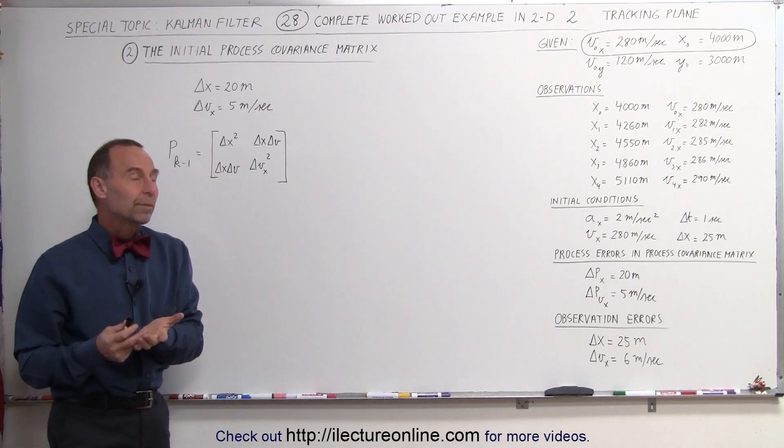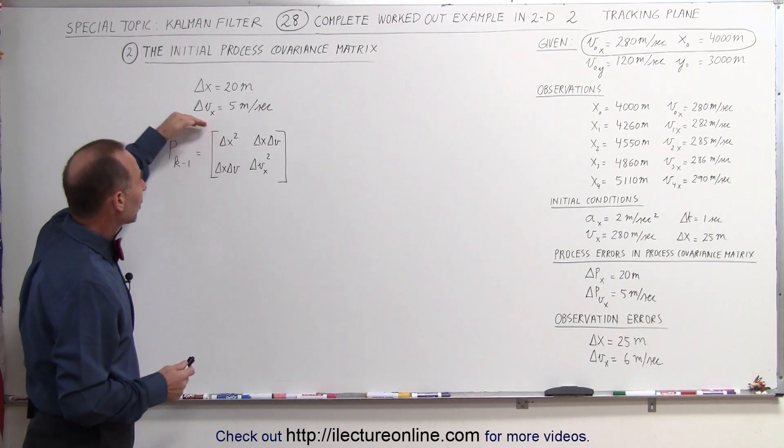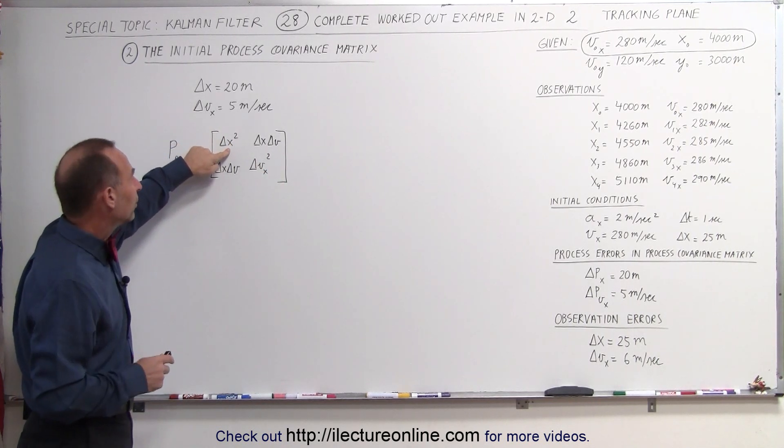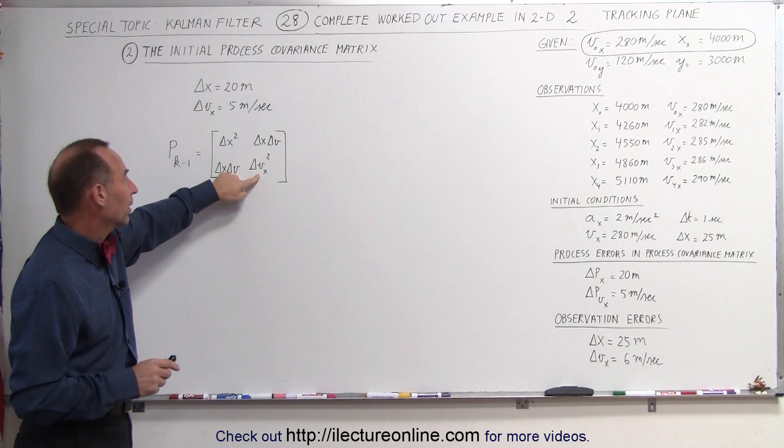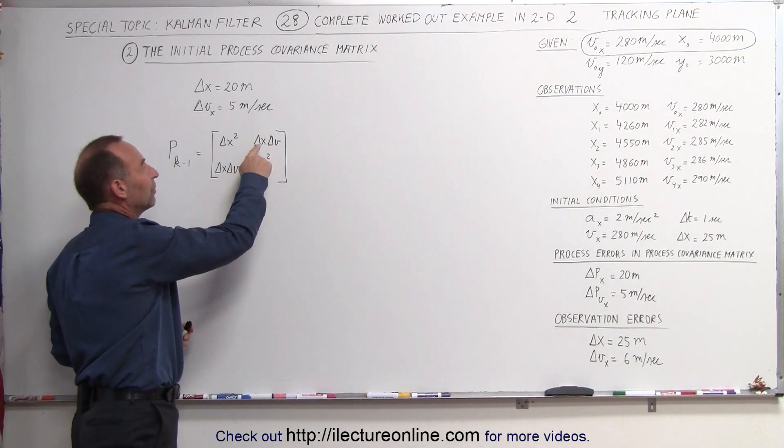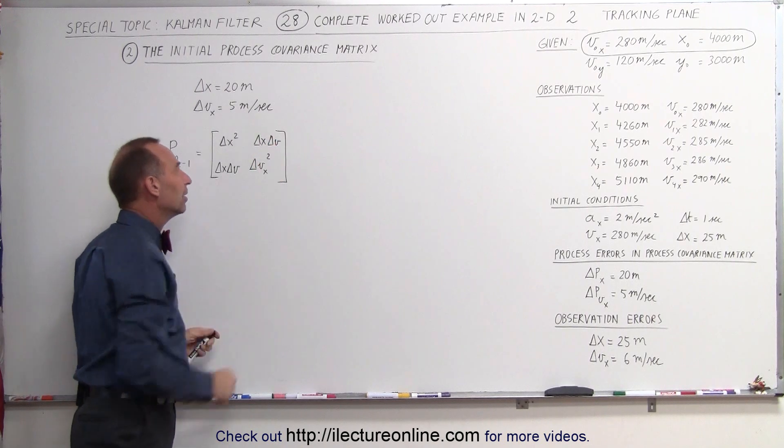It's a 2 by 2 matrix because we're doing a two-dimensional example. Across the diagonal, we have the error in the position squared and the error in the velocity squared. The cross terms are simply the products of the error in the position and the error in the velocity.